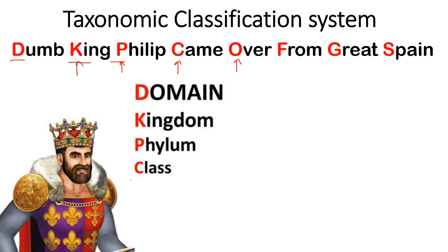If we break down Class, we get O for Order. If you break down Order, we get F for Family. If you break down Family, we get G for Genus. And if you break down Genus, we get S for Species.